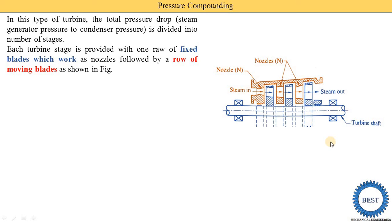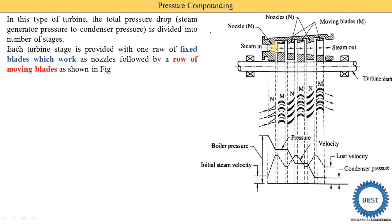The number of stages depends on the capacity of the power plant and the steam turbine — 10 to 15 stages are also possible, but in this diagram we only draw three stages. The first stage is the nozzle then moving blade; the second stage is again nozzle then moving blade; and the third stage is nozzle then moving blades. In the upper part of the diagram we see the combination of nozzle, moving blades, and turbine shaft. The same arrangement is mirrored in the bottom part of the shaft.